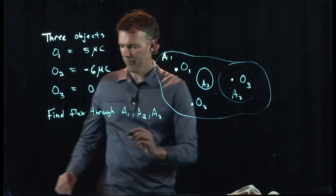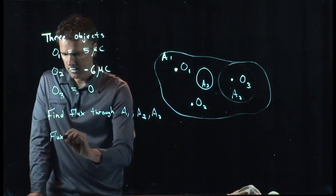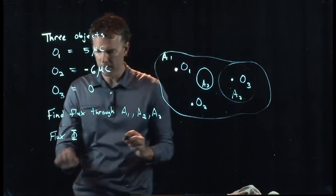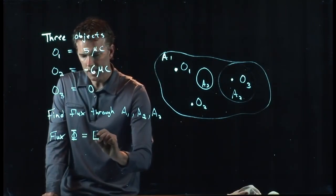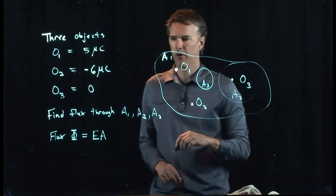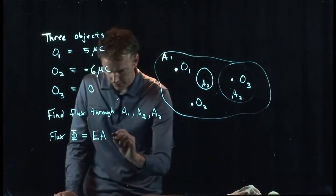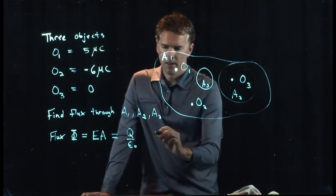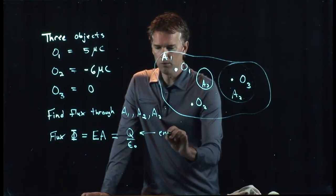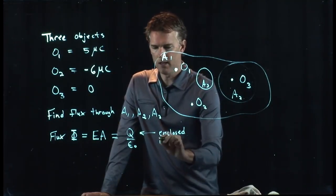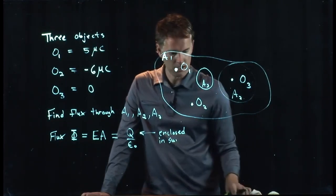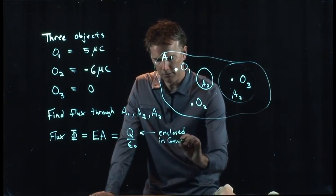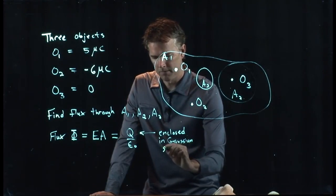Flux, we usually write with a capital phi. Typically you write it with a capital phi. That is just E times the area. And Gauss's law tells us it's Q over epsilon naught. This is enclosed in that surface, enclosed in the Gaussian surface.